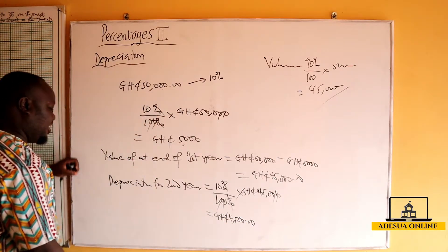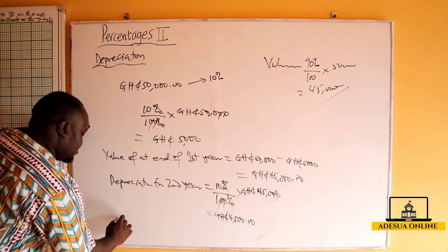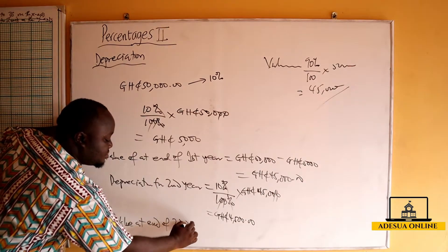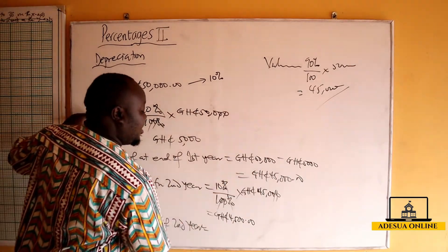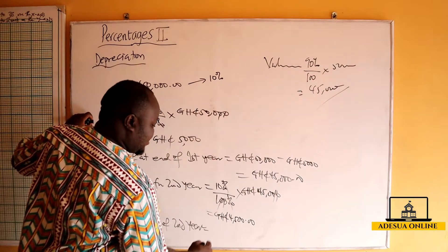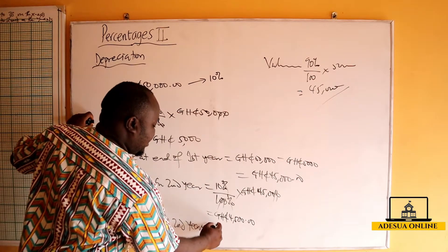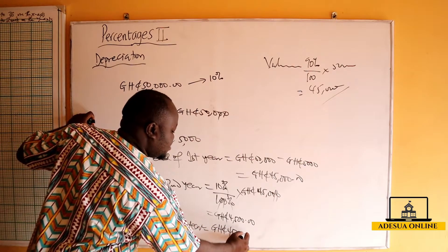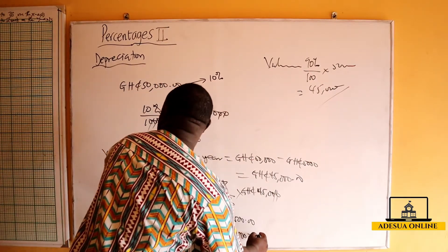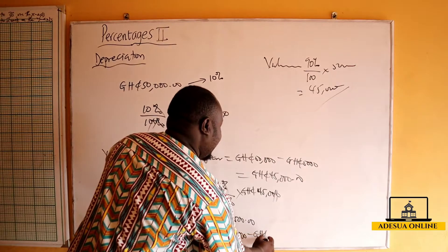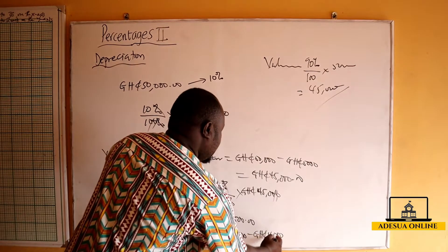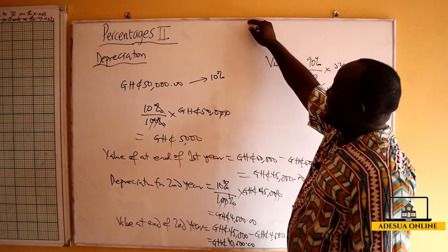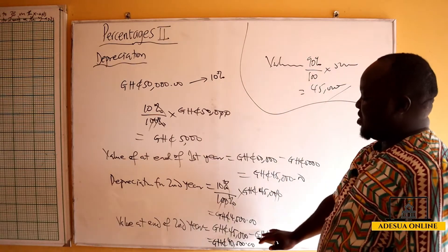So the value at the end of the second year: the value at the start of the second year is 45,000, minus 4,500, which gives us 40,500. Now we'll do the same thing for the third year.